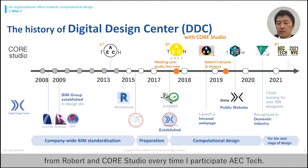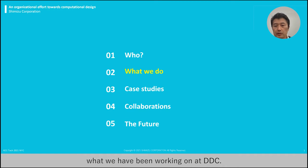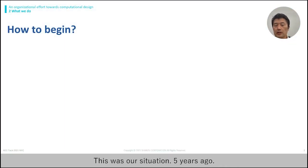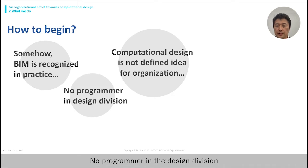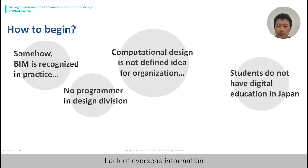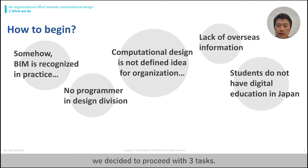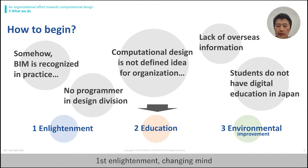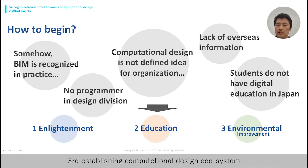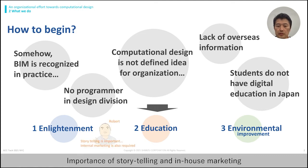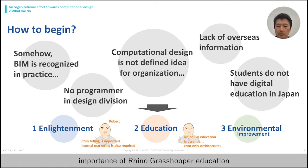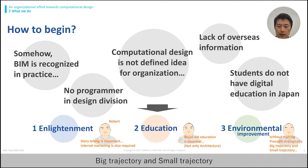I would like to share our effort to penetrate computational design in the company. I adapted many pieces of advice from Robert and Core Studio every time I participated in ACTEC. This was our situation five years ago: BIM was somehow recognized in practice, computational design was not a defined idea for the organization, there were no programmers in the design division, students do not have digital education in Japan, and there was a lack of overseas information. Based on those, we decided to proceed with three tasks. First, enlightenment — changing minds. Second, education — teaching computation technologies. And third, establishing a computational design ecosystem, which we called environment improvement in the organization. There were key pieces of advice from Robert: the importance of storytelling and in-house marketing, the importance of top-down executive education, big trajectory and small trajectory.